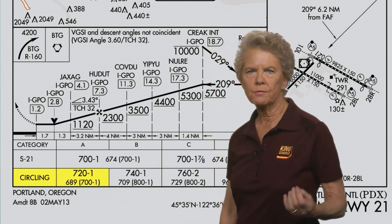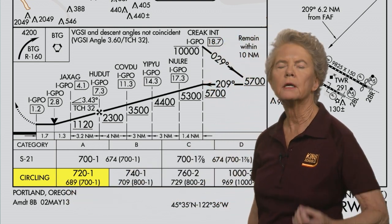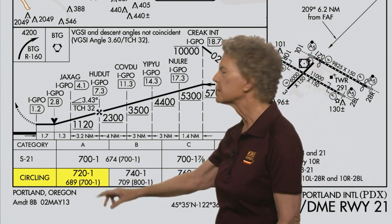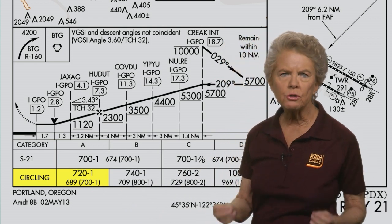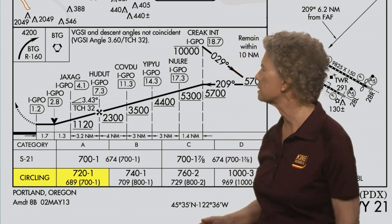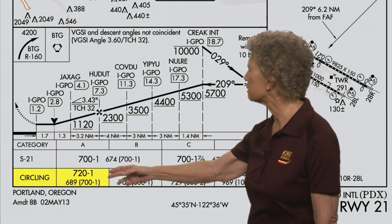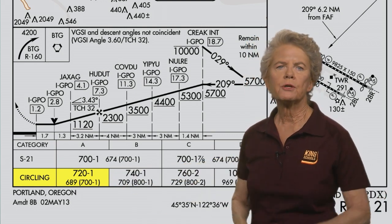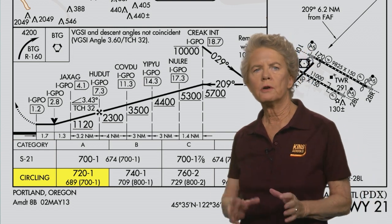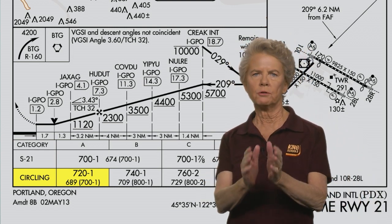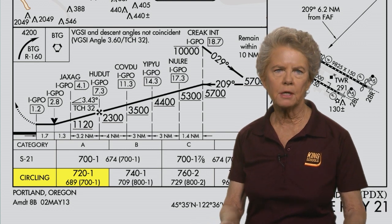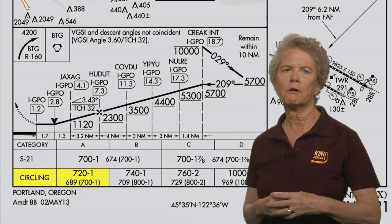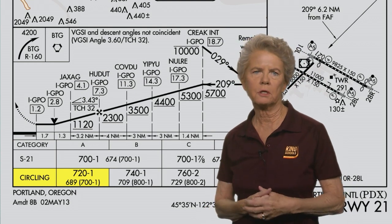In this case for a category A airplane, the minimum descent altitude is 720 feet MSL. Circling minimums will usually be higher than the straight-in minimums as they are here. Not always, but usually. And that makes sense because when you're circling, you're not on an exact defined approach path the way that you are if you're flying a straight-in approach, and there may very well be obstructions in that area around the airport that you're circling in.